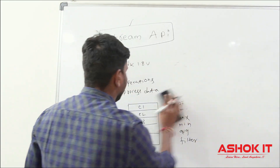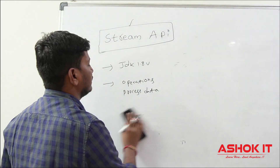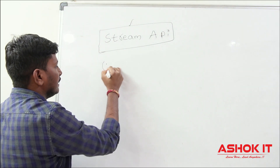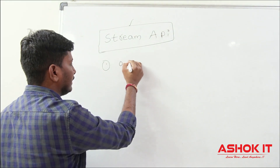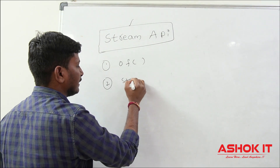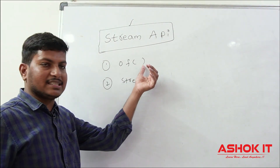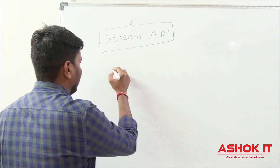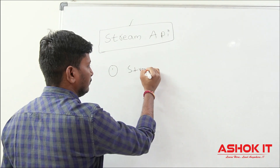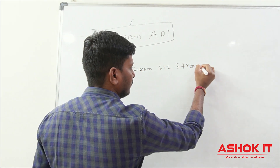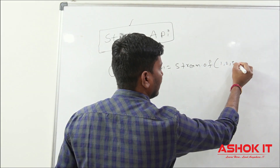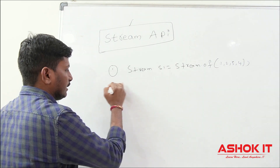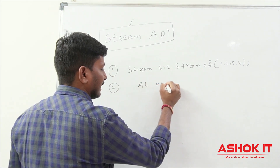To perform operations on data using Stream API, first we need to create the stream object. A stream object can be created in two ways: using the `of()` method and using the `stream()` method. Using the `of()` method: `Stream s1 = Stream.of(1, 2, 3, 4)` — you can give some values as input to create the stream.